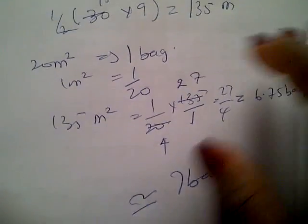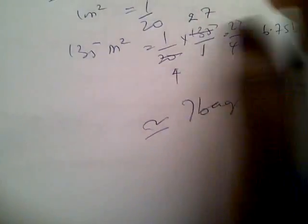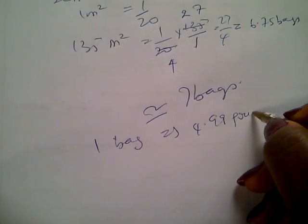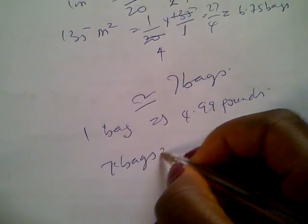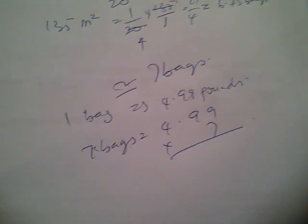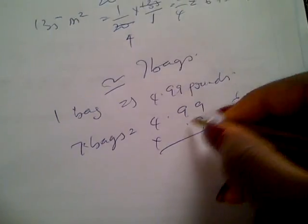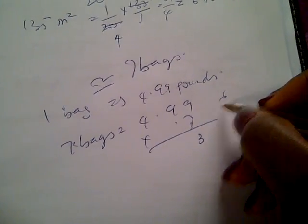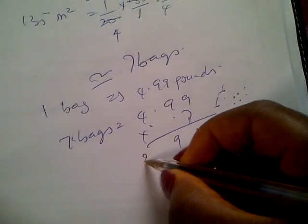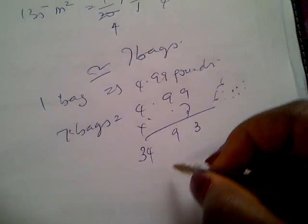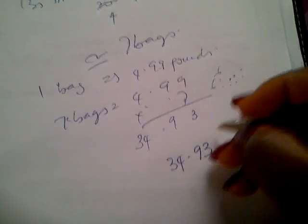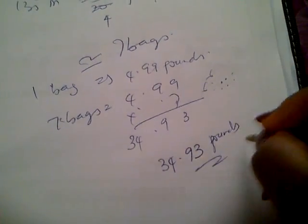One bag costs £4.99. So we need to calculate 7 times 4.99. Let's do this: 7 times 99 is 693, carry the 6. 7 times 4 is 28, plus 6 is 34. Now divide by 100, which gives you £34.93. So that's it for question number seven.